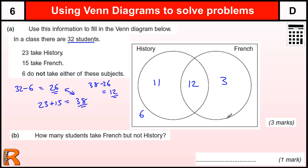You're going to get 1 for getting the 6 on the outside, 1 for getting the 12 in the middle. And there is 1 for if you have 26 in the total of History and French. So you could make a few mistakes there but still get some marks.